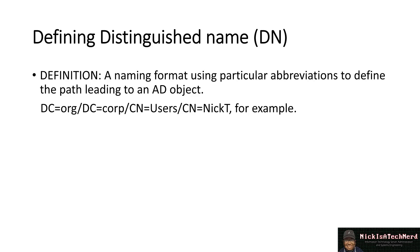You can pick the parts you want, but the order is important — it has to be in order. Looking at our example, in the organization, when you open up Active Directory Users and Computers you would drill down folders. This is your drill down path: dc is org, so org is the first folder, then corp is the second one, then users is the third one, and then you look for the nick t user object.